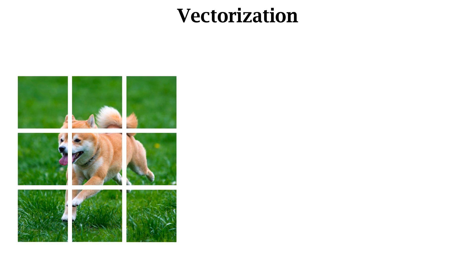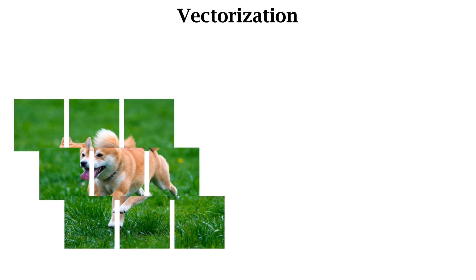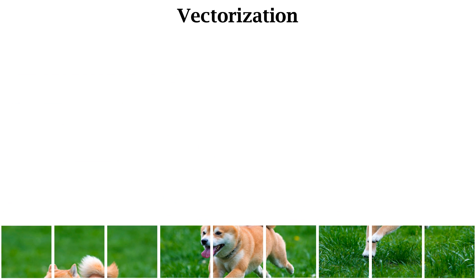Suppose the image is split into 9 patches. Every patch is a small color image with RGB channels. A patch is an order 3 tensor. The next step is to vectorize the patches.